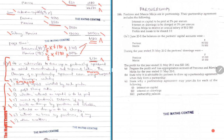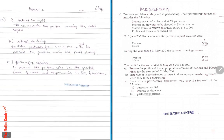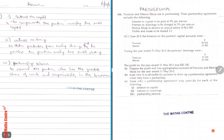Part C: state why a partnership agreement may provide for each of the following. Interest on capital is to compensate the partner investing the most capital. For example, Precious invests $90,000 and Marsha invests $70,000 — it seems unfair because the amounts are different. So they try to make it equitable by paying each partner interest on capital at a certain percent.